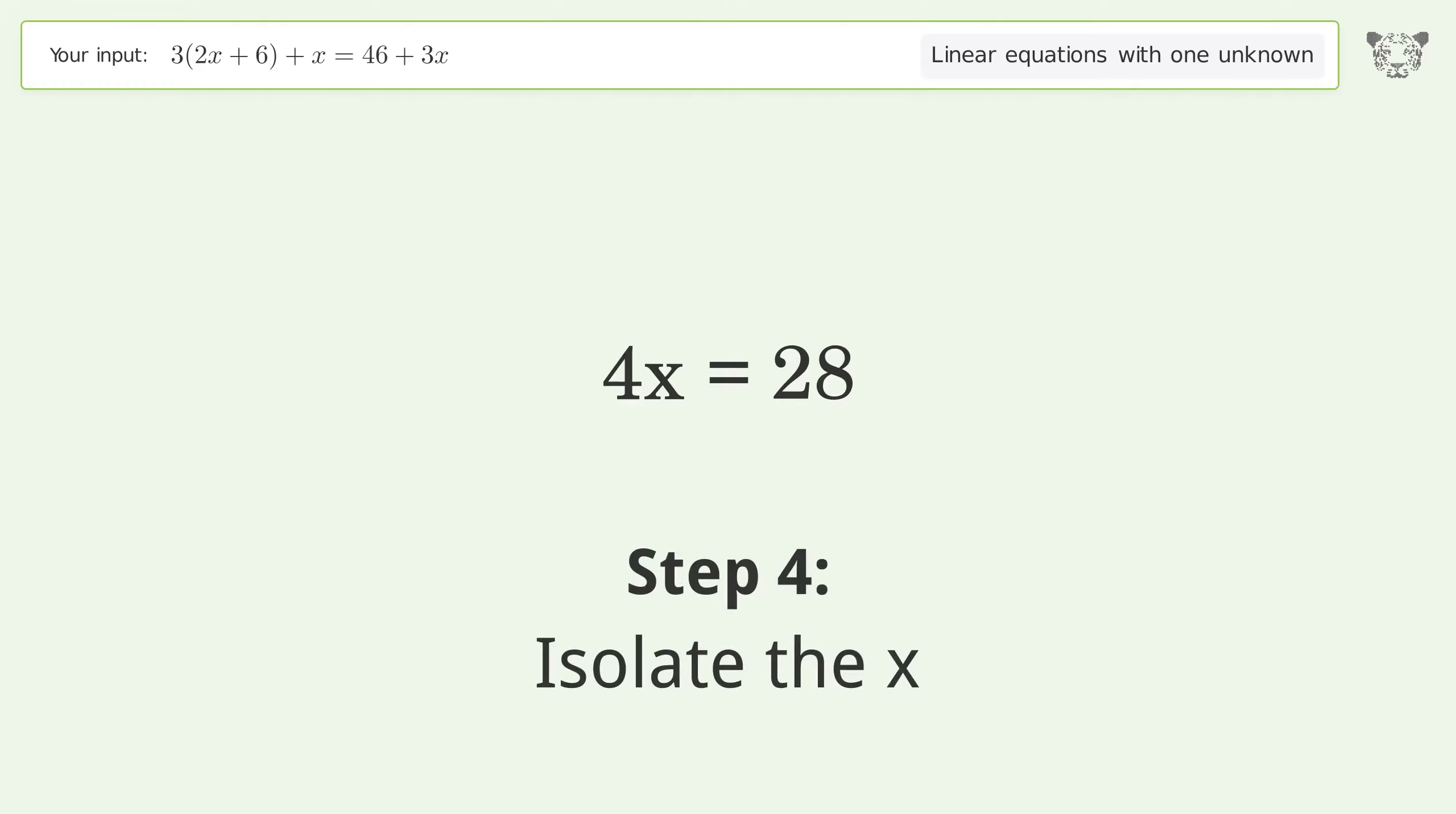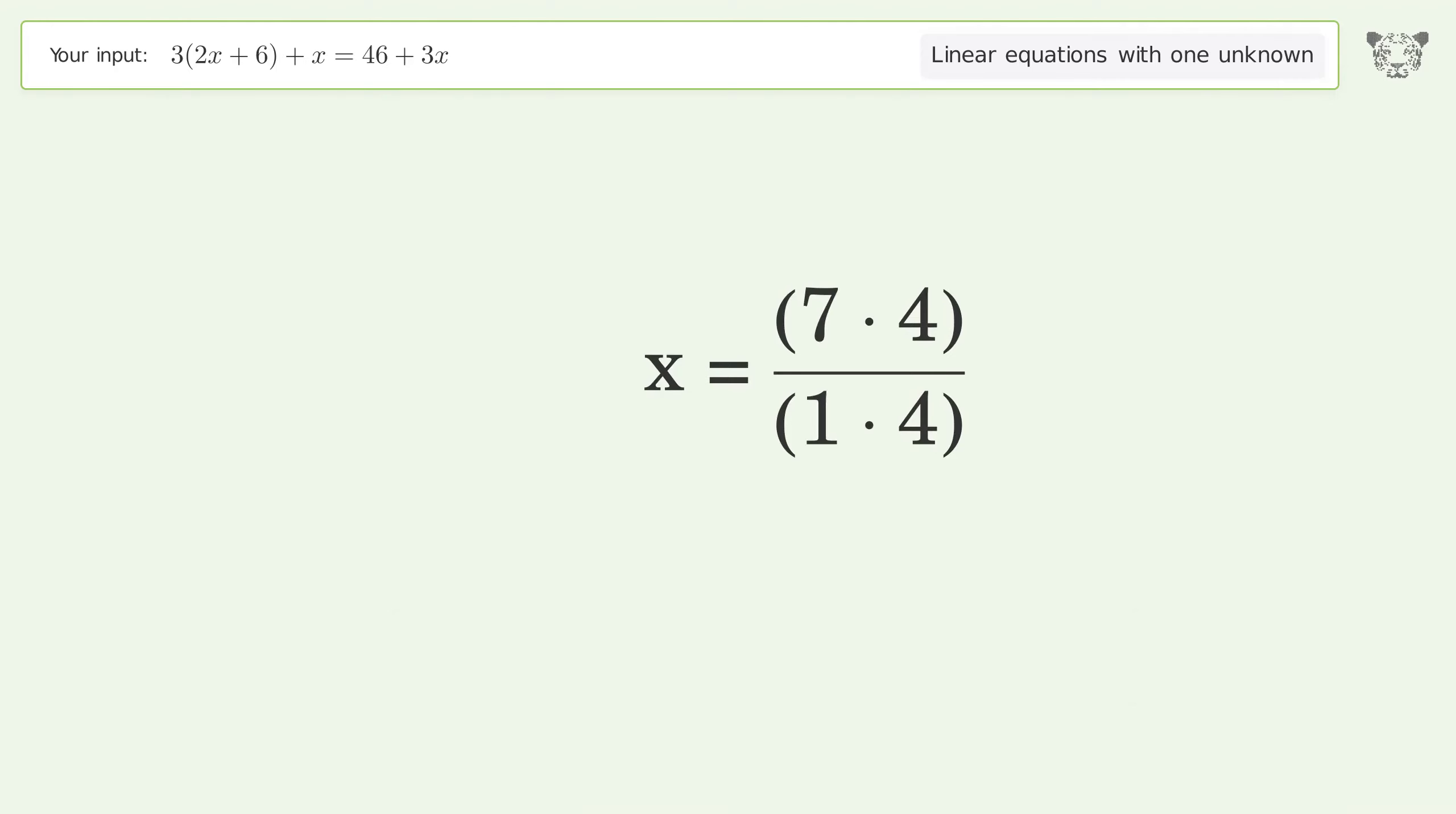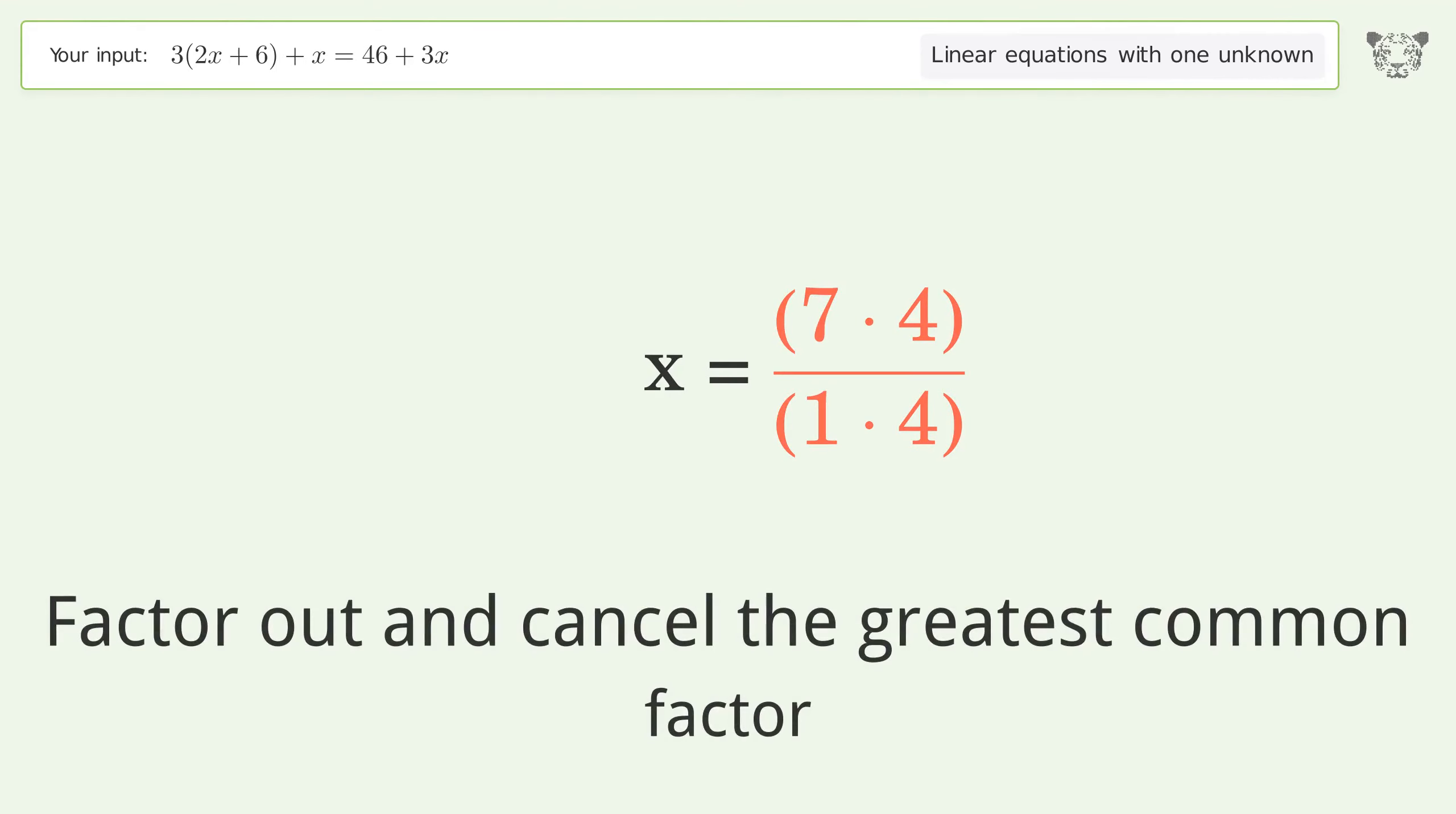Isolate the x. Divide both sides by 4. Simplify the fraction. Find the greatest common factor of the numerator and denominator. Factor out and cancel the greatest common factor.